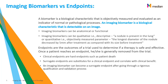It is important to understand the definition of imaging biomarkers since they are fundamental to what is assessed on a medical image. A biomarker is a biological characteristic that is objectively measured and evaluated as an indicator of normal versus pathological processes. A common example of a biomarker is body temperature. An imaging biomarker is a biological characteristic that is detectable on a medical image.